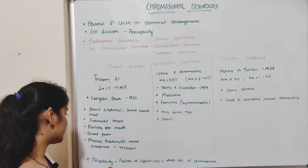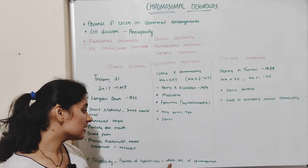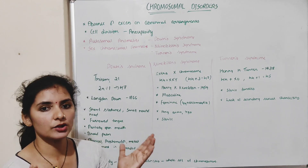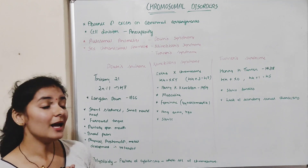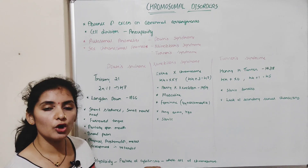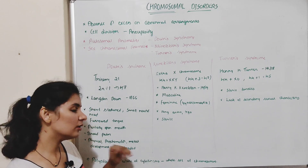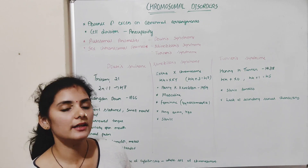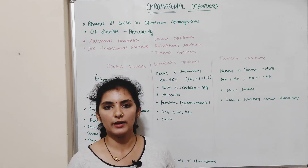Now let me talk about polyploidy. Polyploidy is a case in which there is an extra whole set of chromosomes — not just one chromosome, but the whole set is extra or doubled. This occurs due to failure of cytokinesis after telophase. Normally after telophase there is cytokinesis, but because of the failure of cytokinesis, the whole set of chromosomes is doubled. This is a rare case and can be seen in some plants.